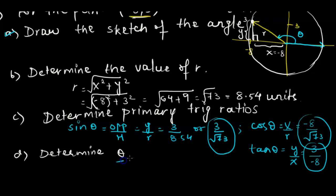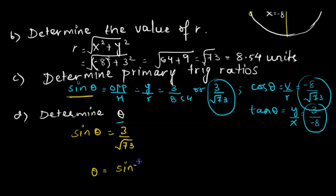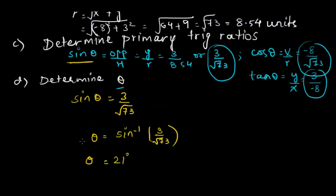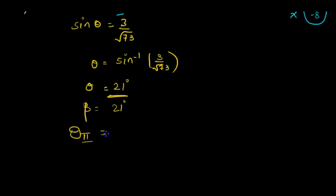To find theta, use the positive ratio — sine theta = 3 over square root of 73 — to avoid extra steps with beta. Isolate theta: theta = sine inverse of (3 over square root of 73) ≈ 21 degrees. This 21 degrees is the first-quadrant angle, so it serves as beta. Since we're in the second quadrant: theta = 180 minus 21 = 159 degrees. This is the final answer for theta.